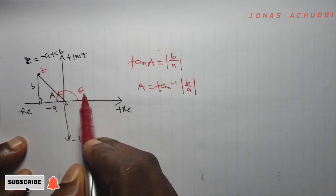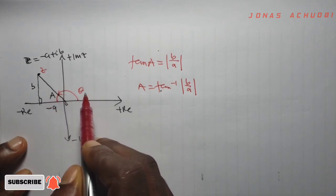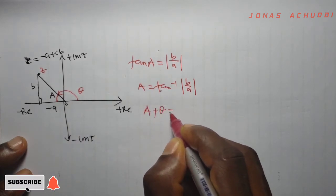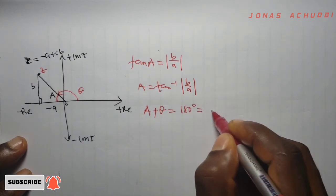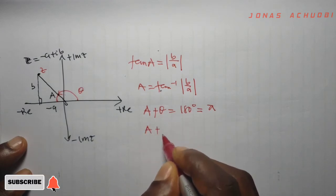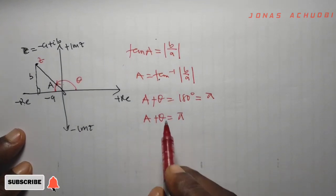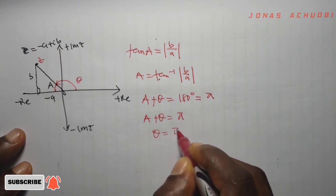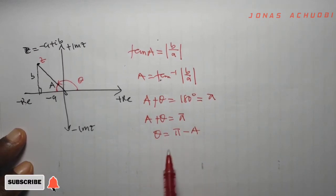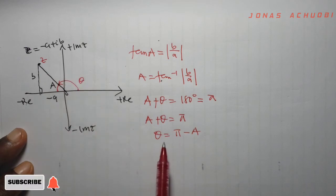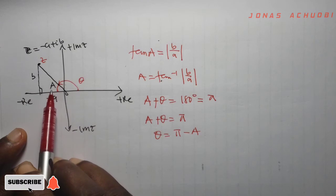Angle alpha and theta have a relationship: their sum gives 180 degrees because they are angles on a straight line. So alpha plus theta equals 180 degrees, which is pi in radians. Therefore theta equals pi minus alpha. This means that if the complex number is in the second quadrant, the argument theta is pi minus the acute angle alpha.